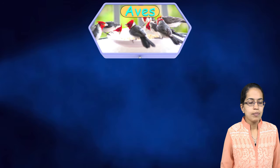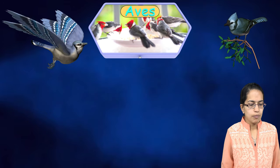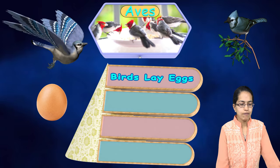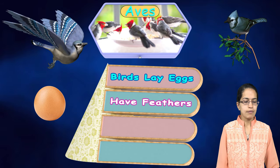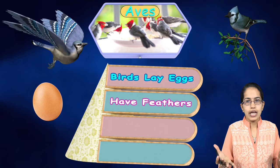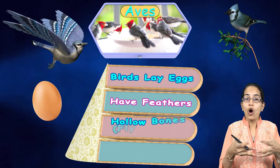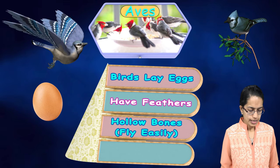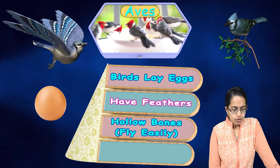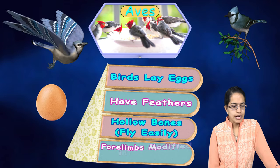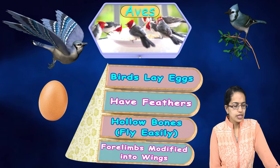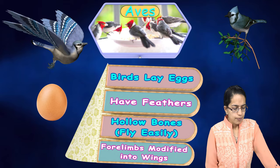Aves are the birds. They lay eggs, have feathers, and have the capability to fly. They have hollow bones and four limbs that are modified — modifications of limbs are seen in this group.